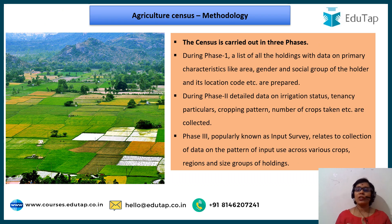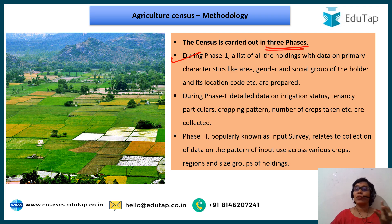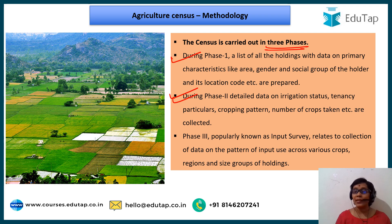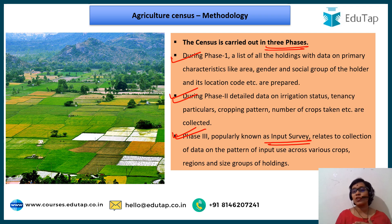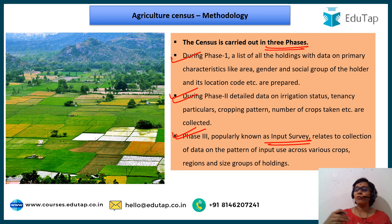The agriculture census is conducted in three phases. Phase one involves listing all holdings with primary characteristics such as area, gender of the holder, social group, and location code. Phase two goes into more detail, collecting information on operational status, tenancy particulars, cropping pattern, and types of crops grown in the area. Phase three, also known as the input survey, relates to collection of data on the pattern of input use across various crops, regions, and size groups of holdings. For 2015-16, phase one and phase two results have already been declared; phase three results are yet to be finalized.